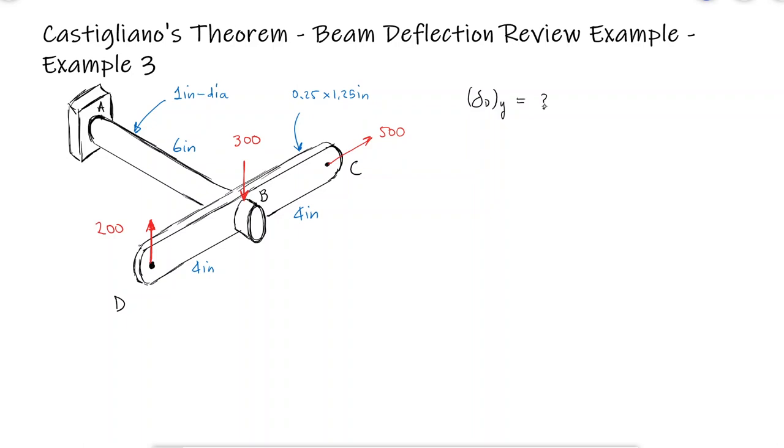The deflection at point D in the y-direction will be the partial derivative of the strain energy with respect to a force that goes in the y-direction, which in this case is the force of 1200 pounds, so we'll call that F. As always, starting from the point of deflection...